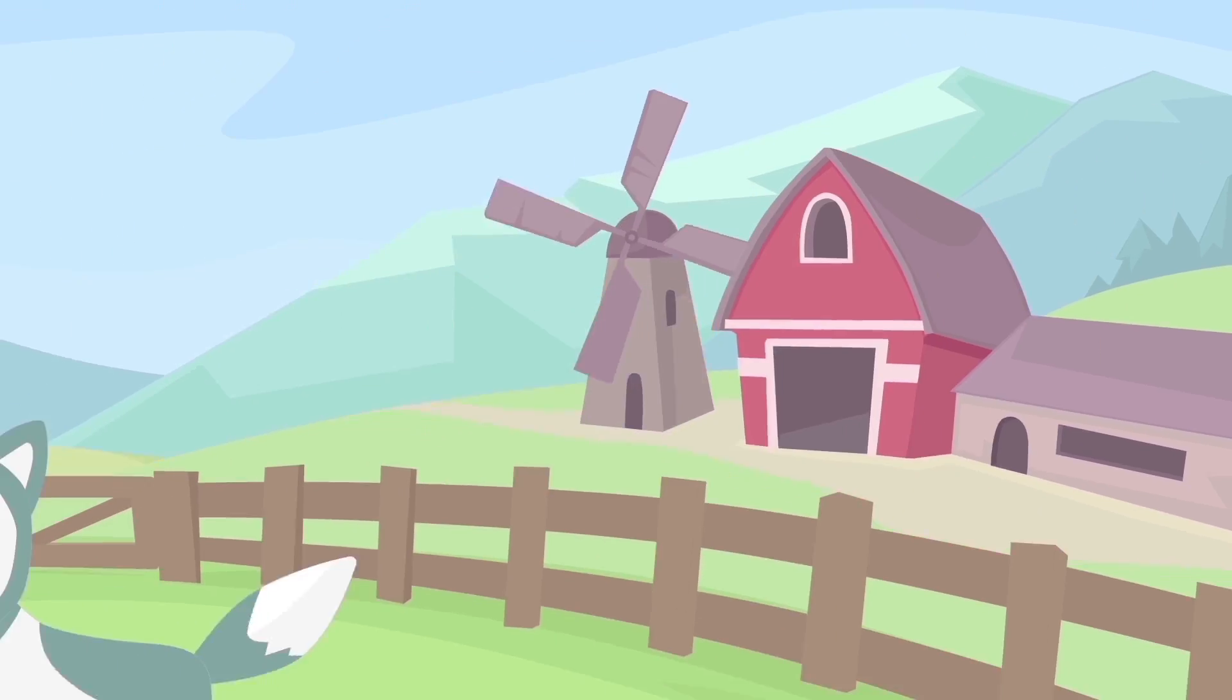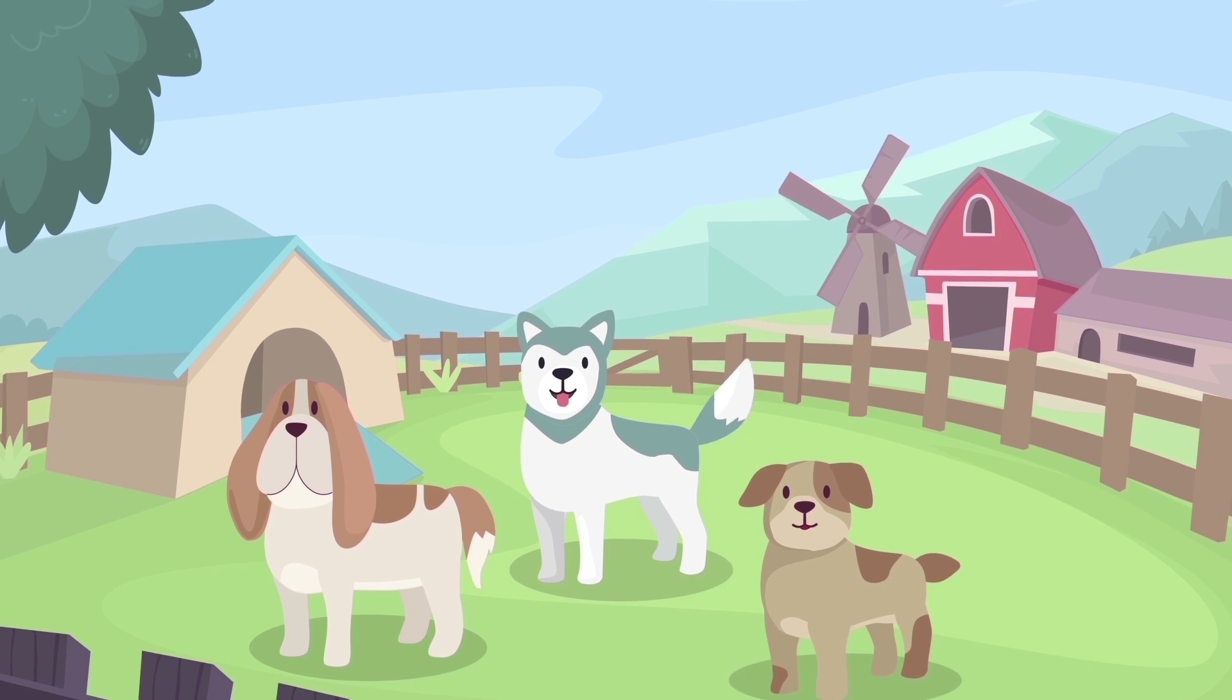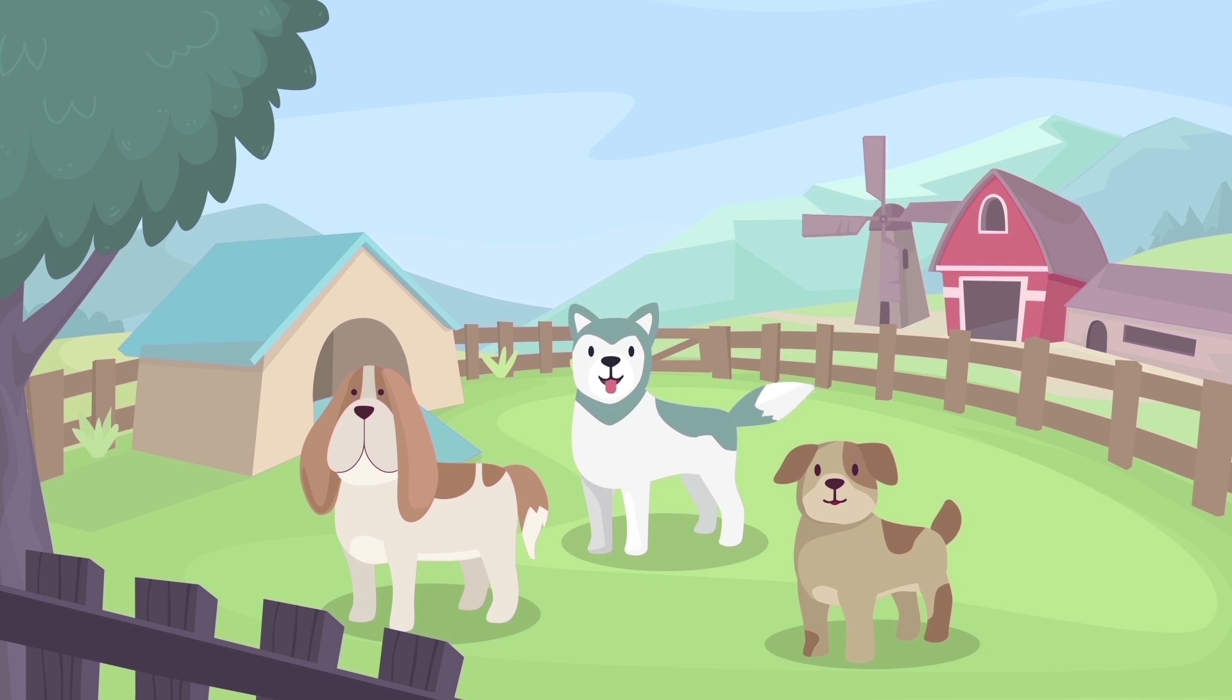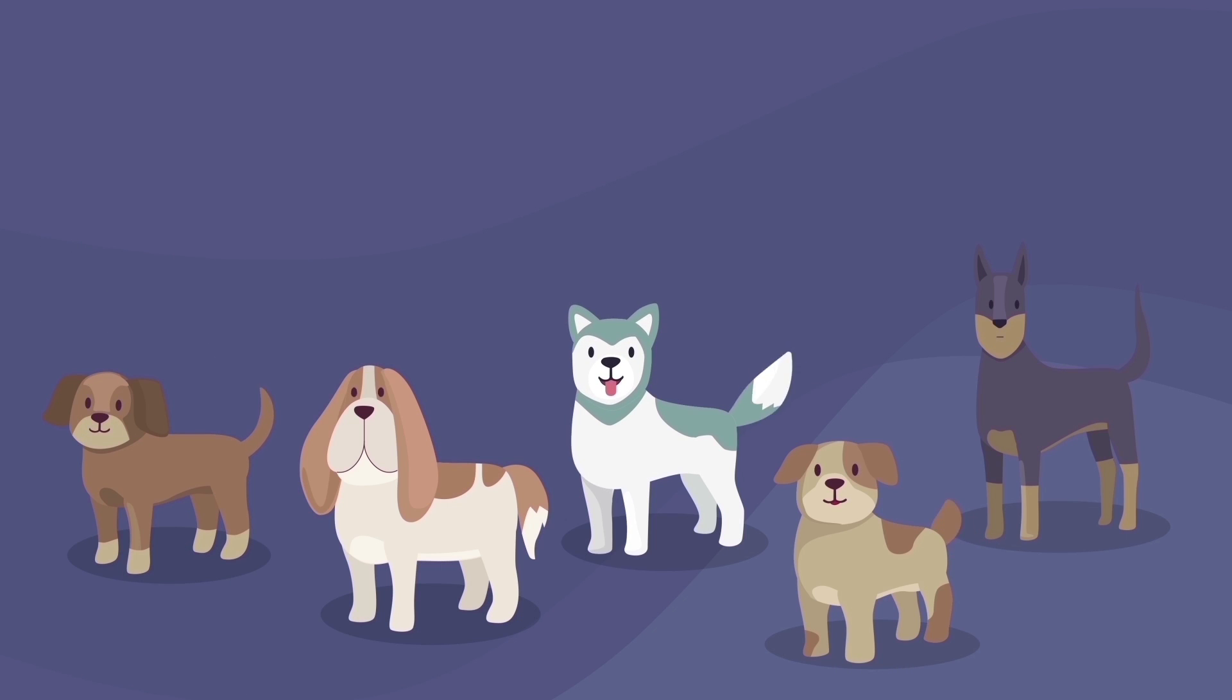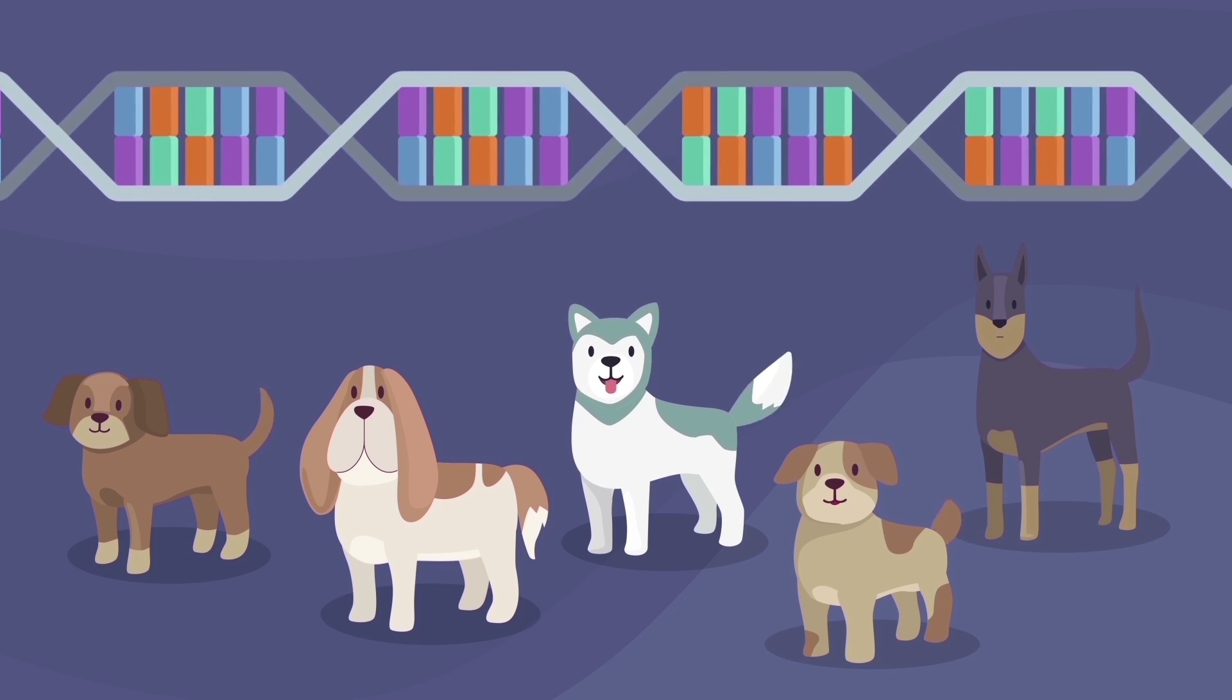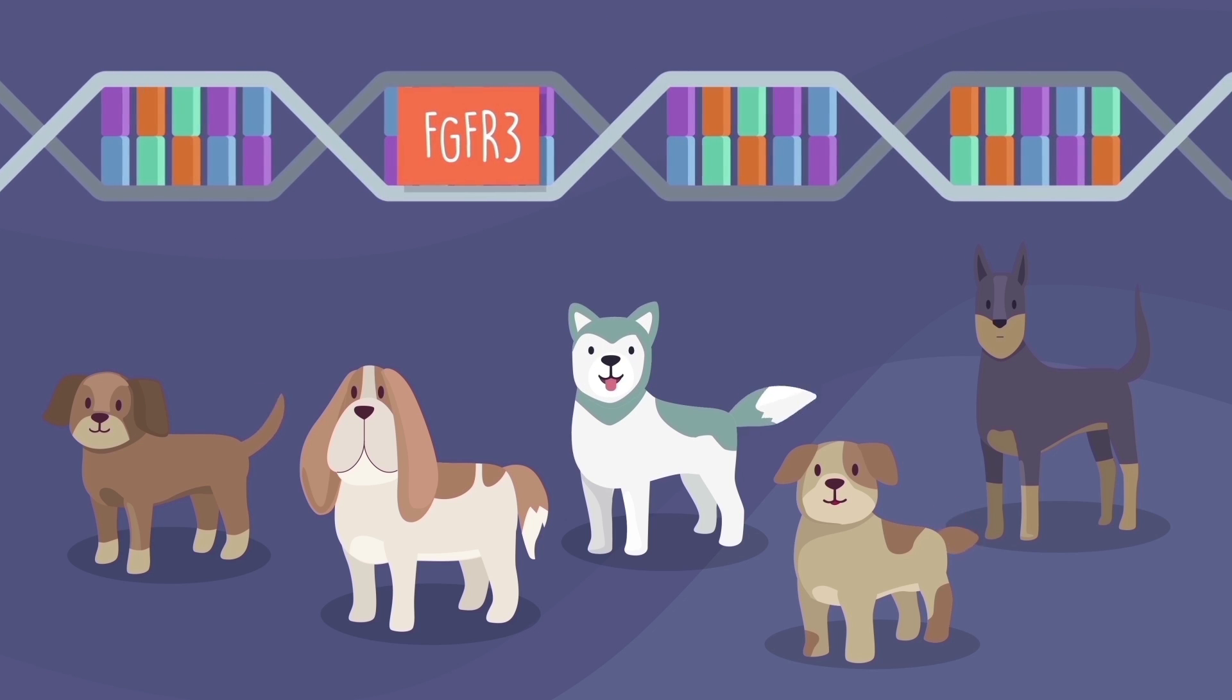One more example can be seen in dogs. Less than 100 generations ago, dog breeders bred a new breed of short-legged fox hunters. At some point during breeding, a mutation occurred on chromosome 3 in the FGFR3 gene.